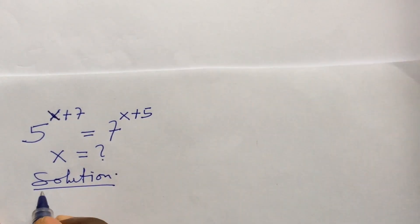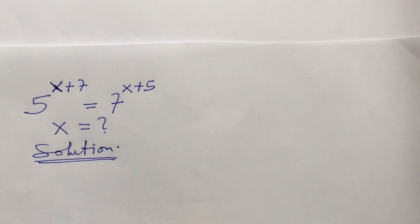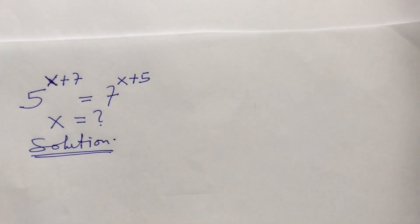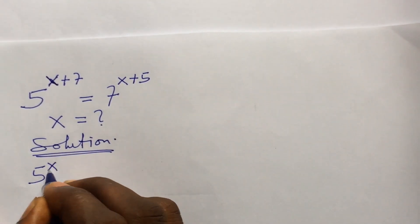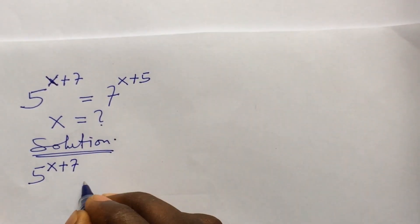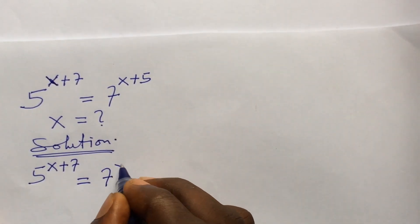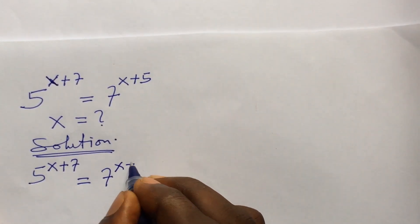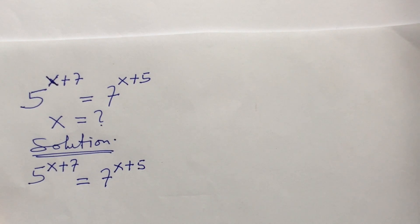So we put down our question again: 5 to the power of x plus 7 equals 7 to the power of x plus 5. We can use two methods to approach this challenge.